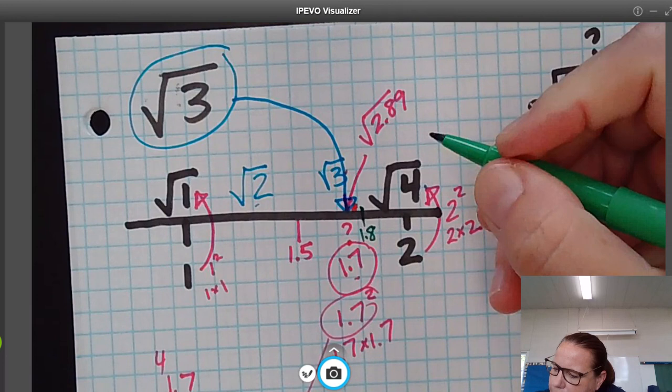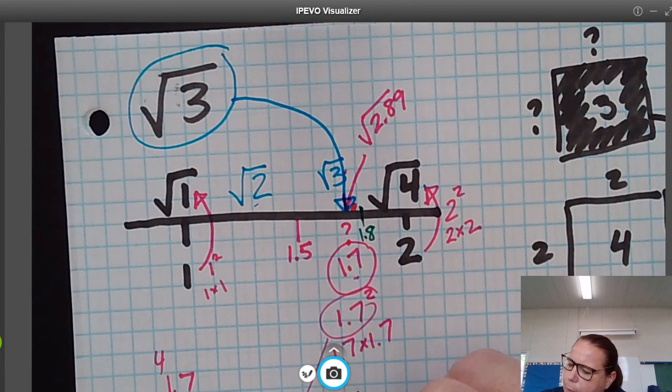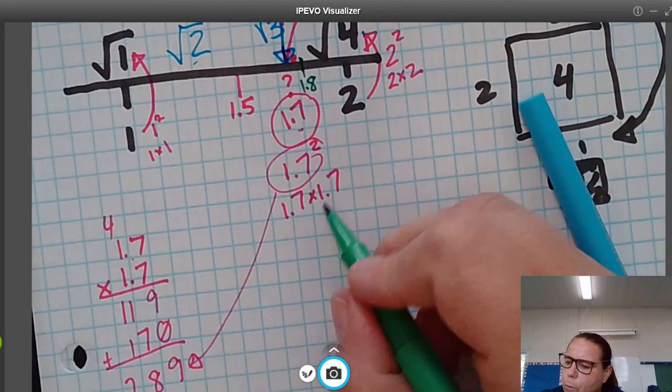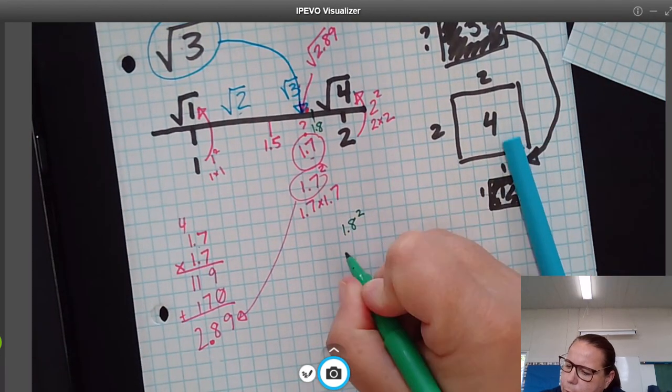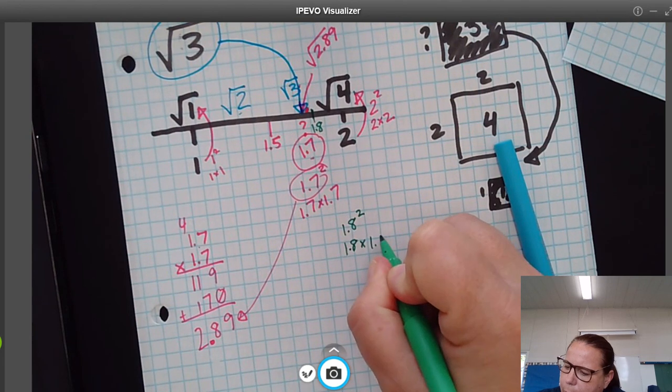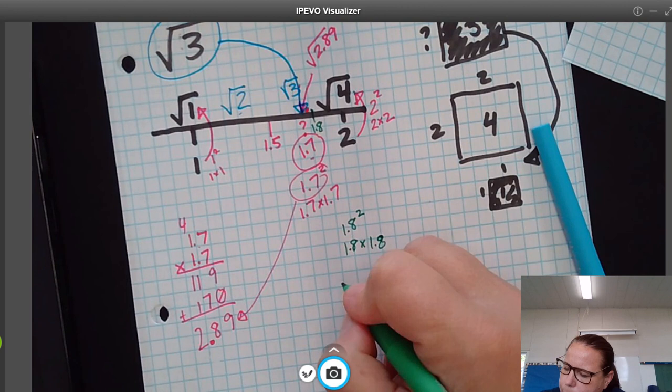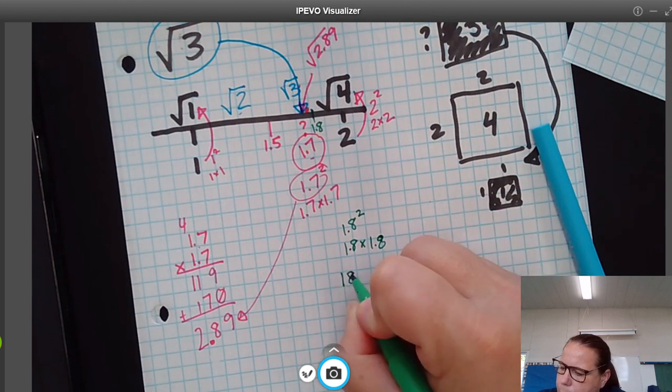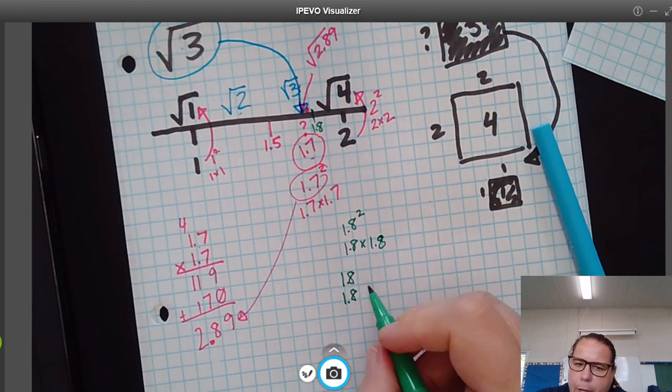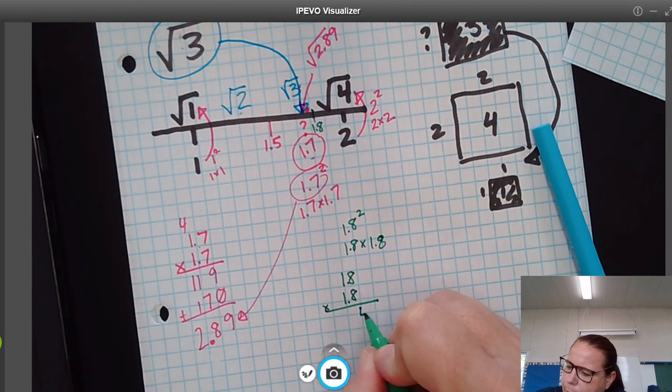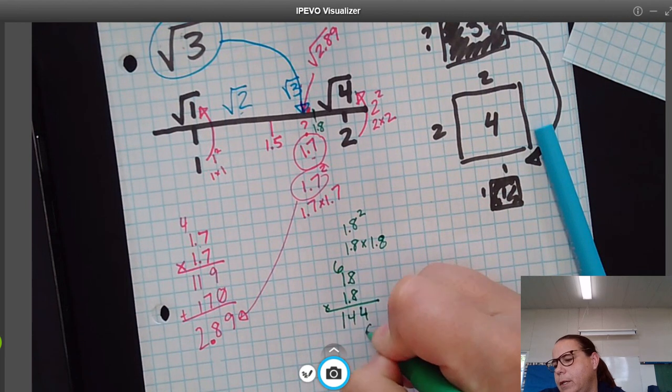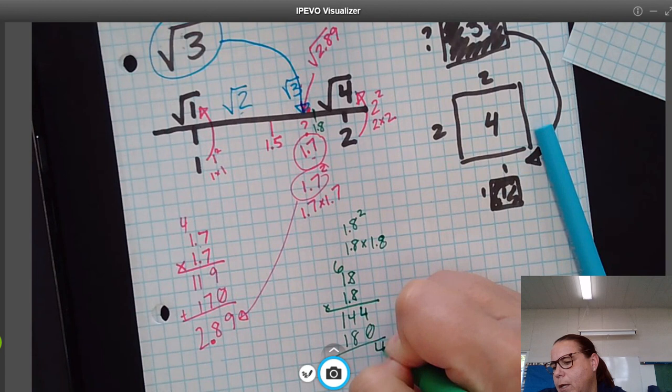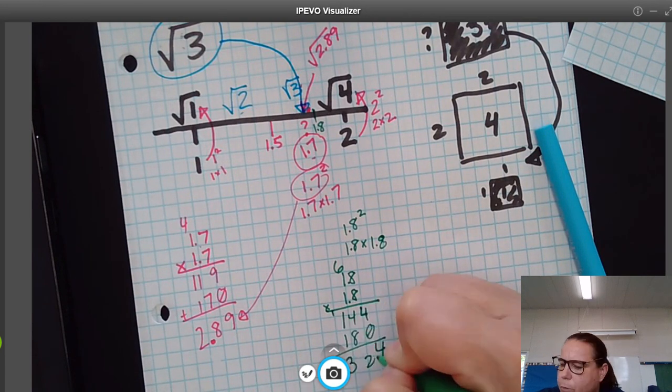We could then test 1.8 and find out what that comes out to. So then we would test 1.8 squared, which is 1.8 times 1.8. 1.8 times 1.8: 64, 8 times 1 is 8, plus 6 is 14, and then that's 18. Then we're going to add that. That's 12, carry the 1, 3, and then there's 2 decimals, 3.24.